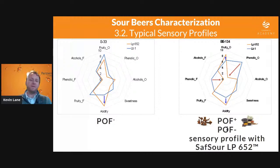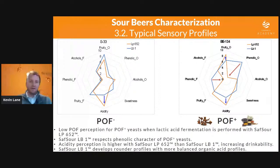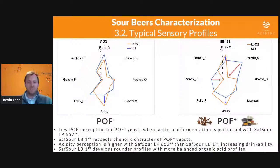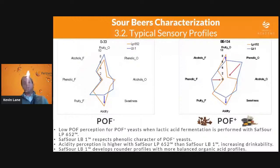We're seeing the POF positive yeast strain acting as if it's POF negative when fermenting a wort kettle soured by LP652, the plantarum. Low POF perception for POF positive yeast strains when lactic fermentation is performed with the plantarum. The brevis, LB1, respects the phenolic character of the POF positive strain and gives a more rounded flavor profile compared to LP652. In both cases, acidity perception is increased by LP652 — the homofermentative bacteria producing twice as much lactic acid.